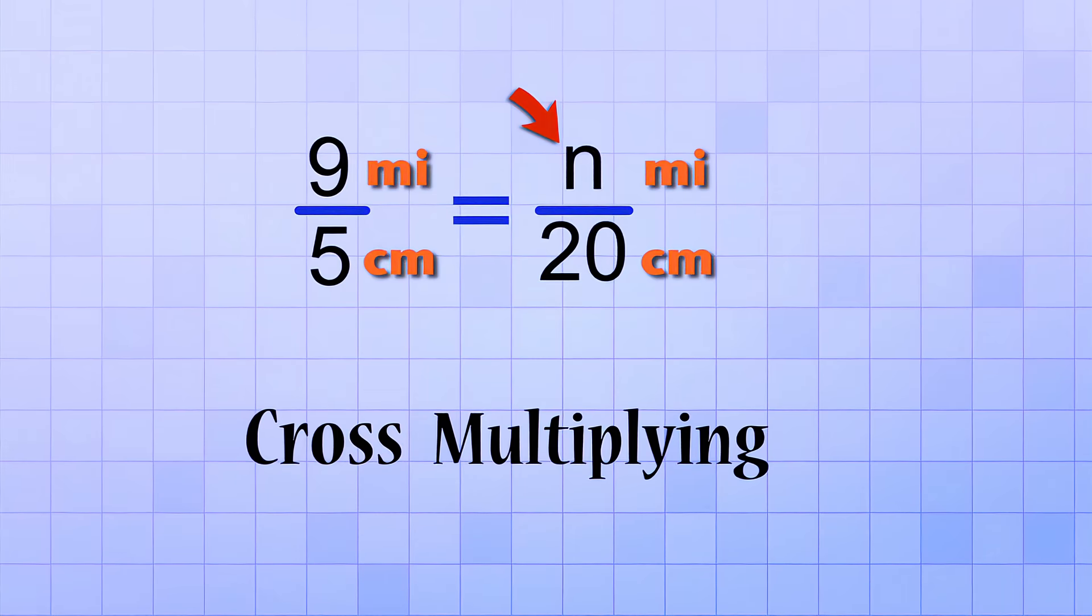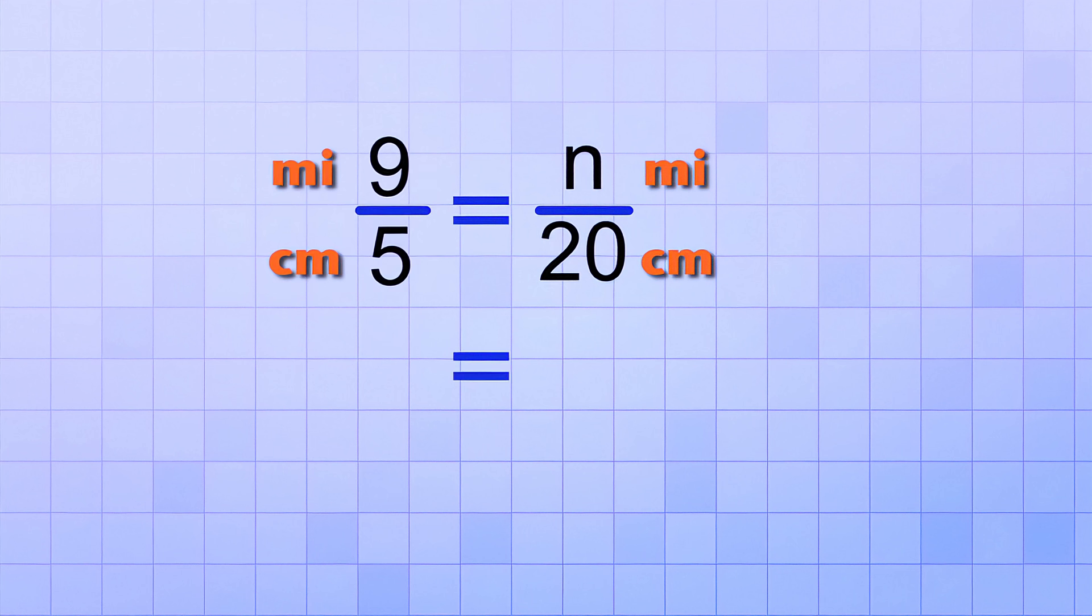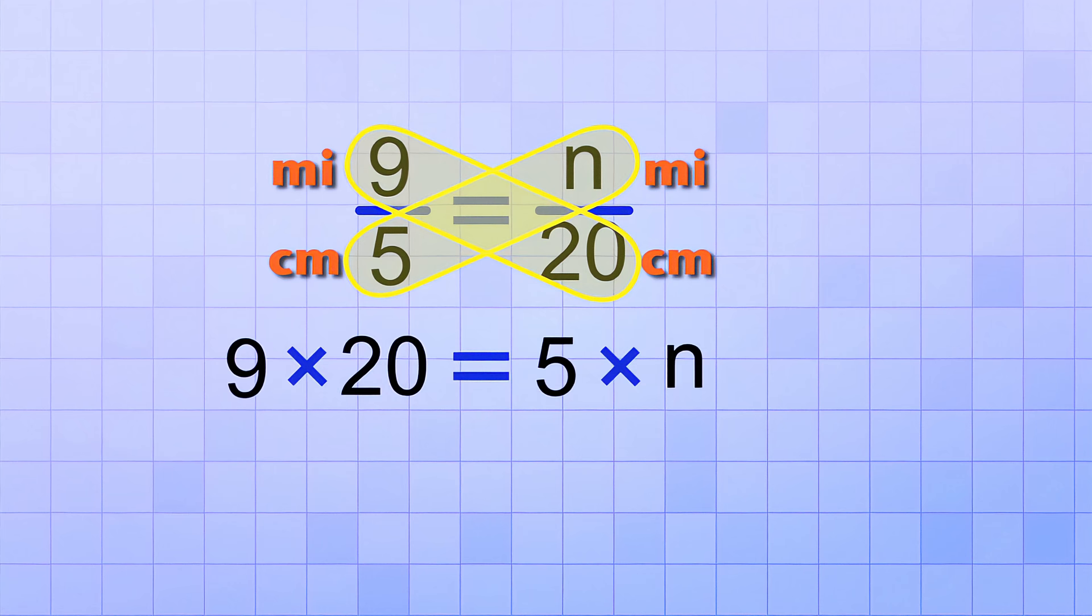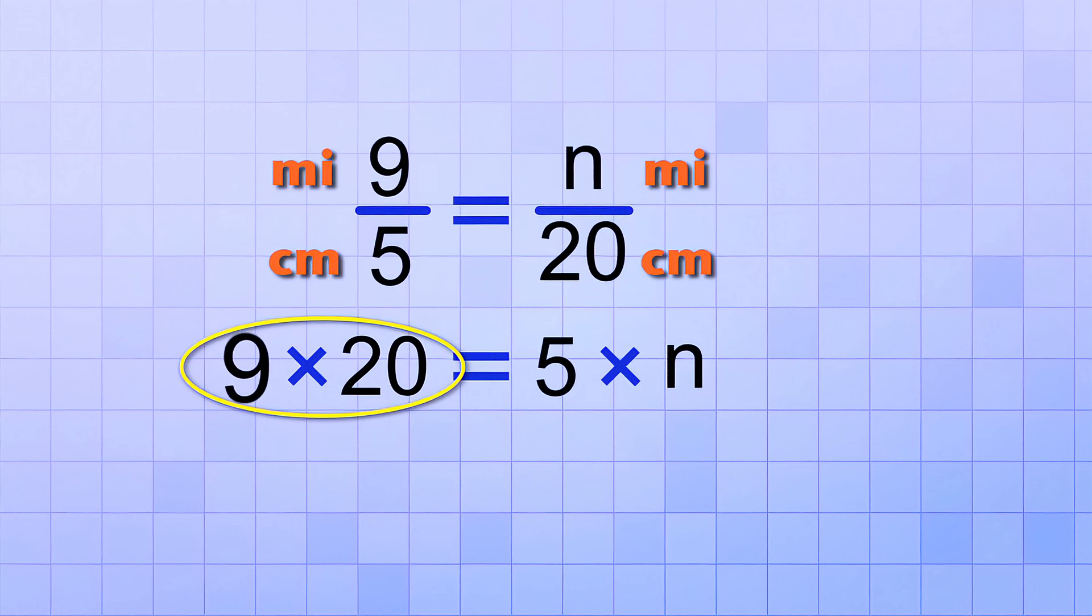To solve this proportion for the unknown number, we use our cross-multiplying procedure. First, we write a new equal sign and then we imagine the criss-cross to show us what we multiply together on each side. On the first side, we have 9 times 20 and on the other side, we have 5 times N. On the side that has two numbers, we can go ahead and simplify. 9 times 20 equals 180.